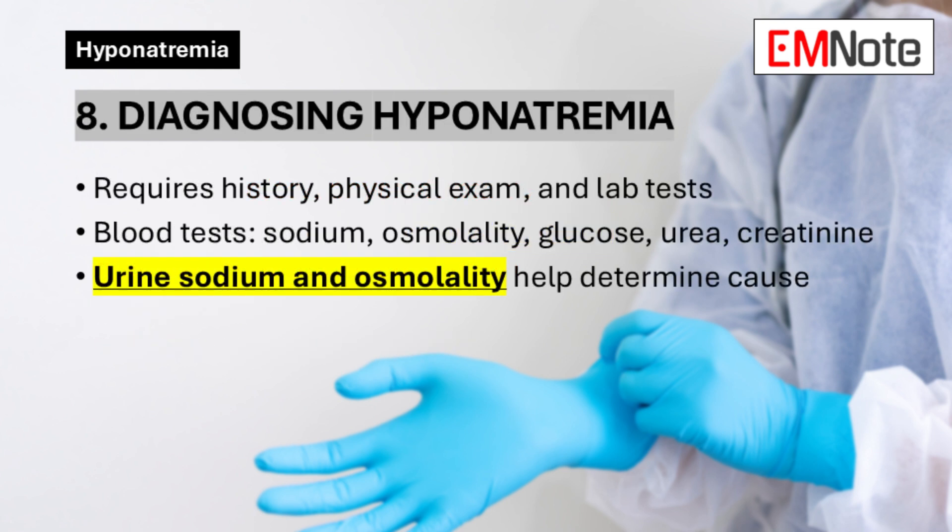Point 8: Diagnosing Hyponatremia. Diagnosing hyponatremia involves a thorough history, physical examination, and laboratory investigations. Blood tests should include serum sodium, osmolality, glucose, urea, creatinine, potassium, and sometimes thyroid and adrenal function tests. Urine sodium and osmolality help determine the cause.